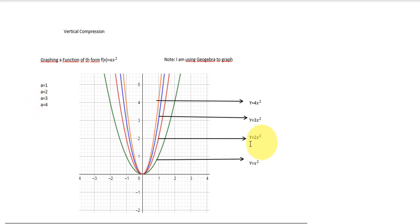Then what is happening with the graph? When the number is getting bigger, the graph is compressing in the vertical axis.